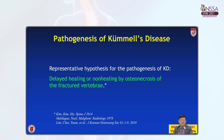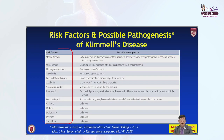What about the pathogenesis of Kummel disease? The representative hypothesis is delayed healing or non-healing by osteonecrosis of the fractured vertebra. Risk factors and possible pathogenesis of Kummel disease include long-term steroid use, osteoporosis, and so on.